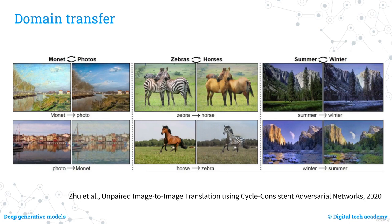On the right, you can see how an image taken in summertime can be transformed into its respective winter image, and vice versa. Starting from a winter image, you can obtain the corresponding summer image.